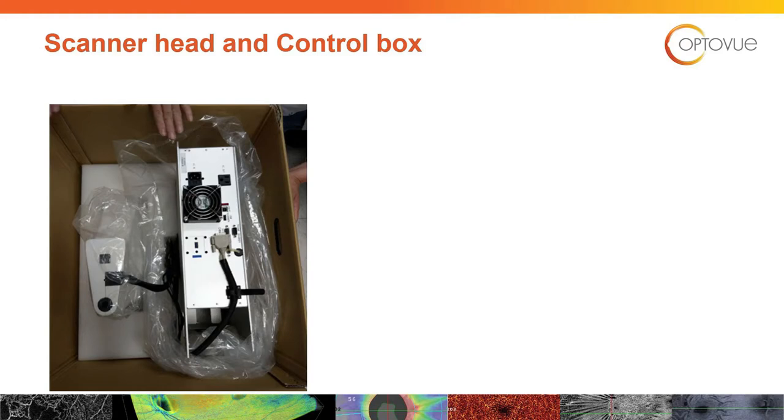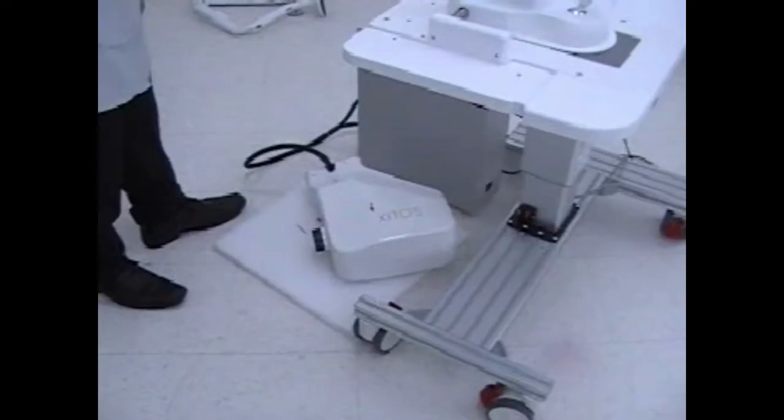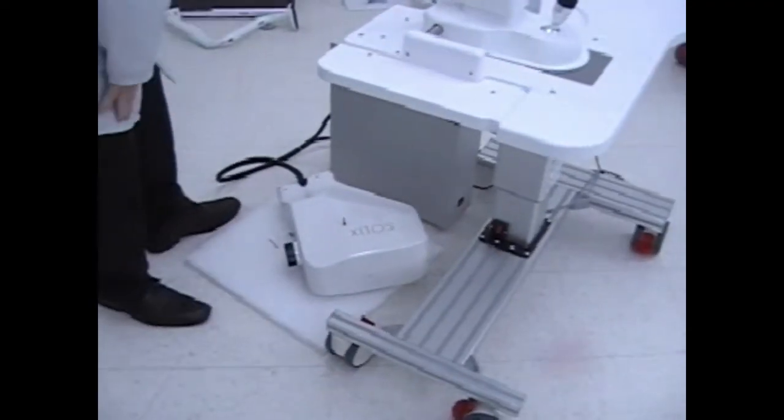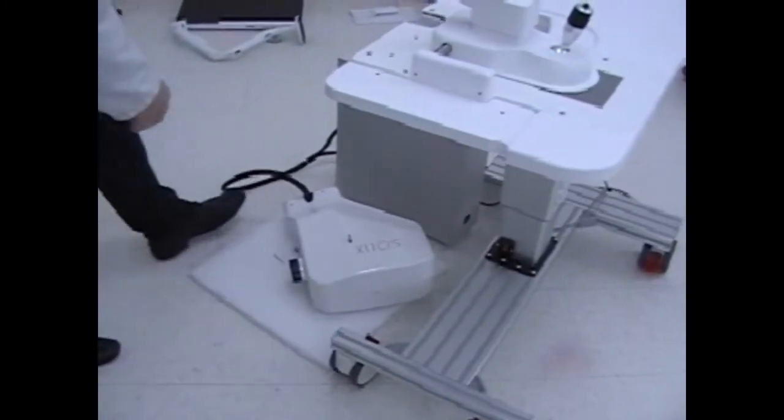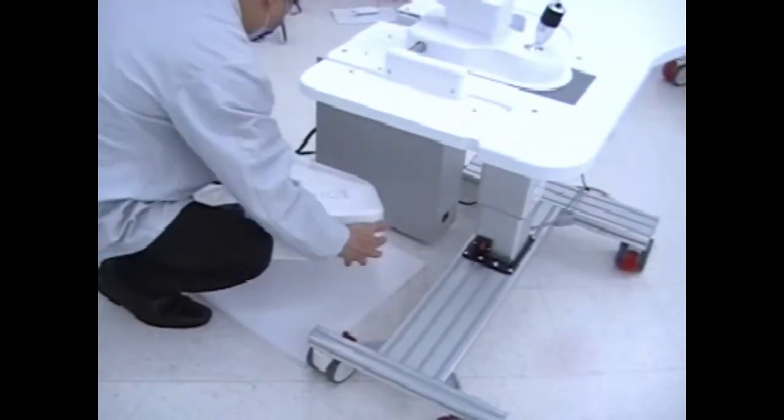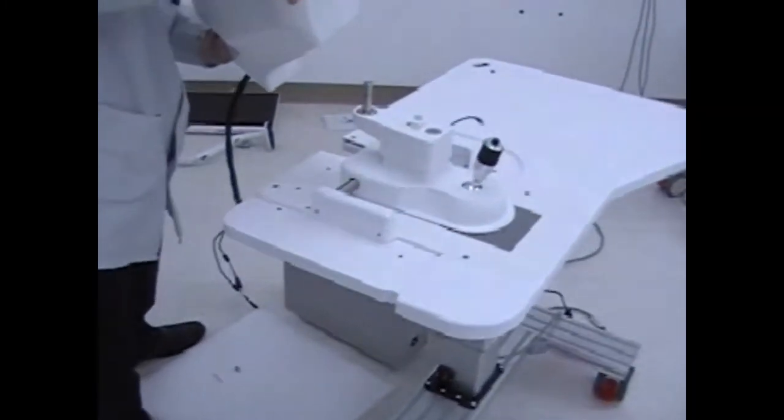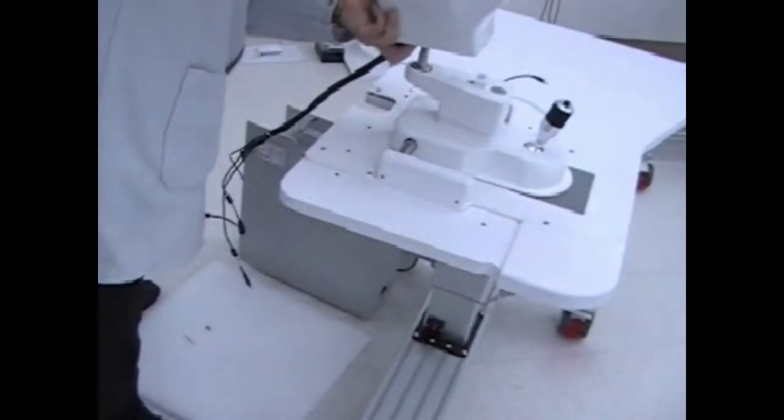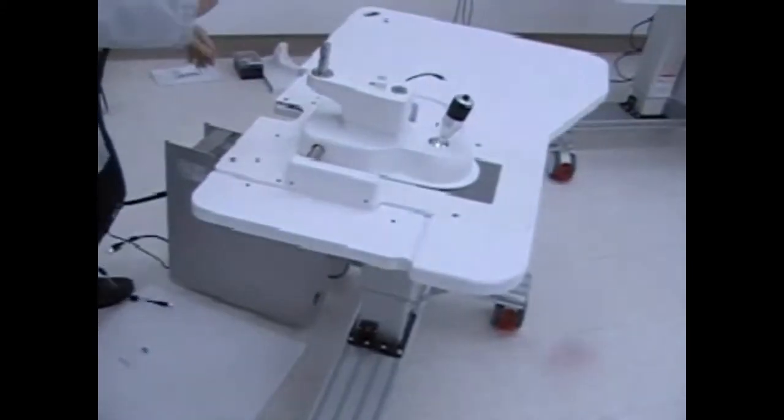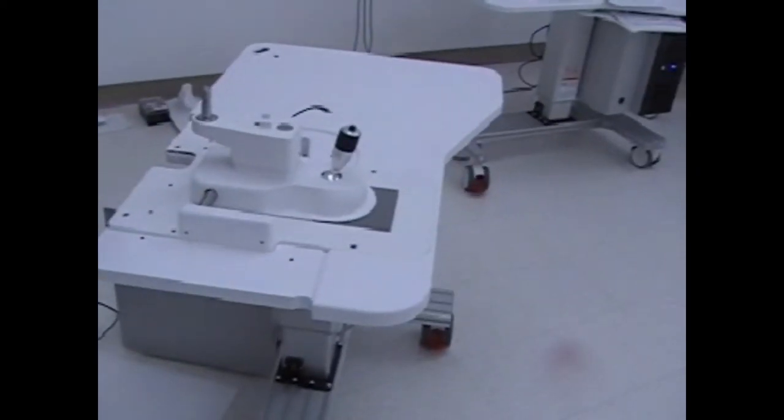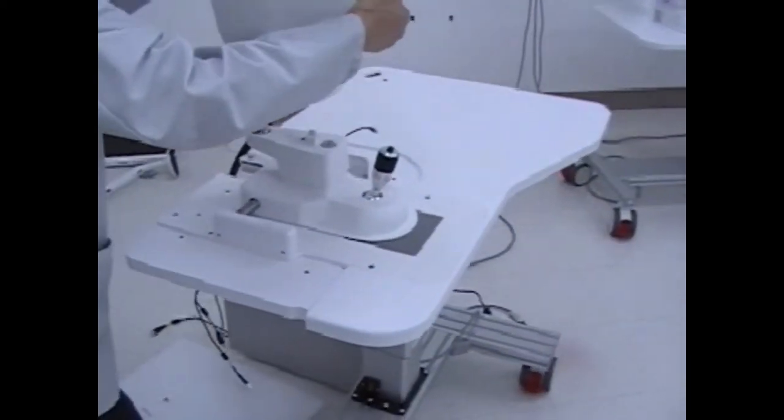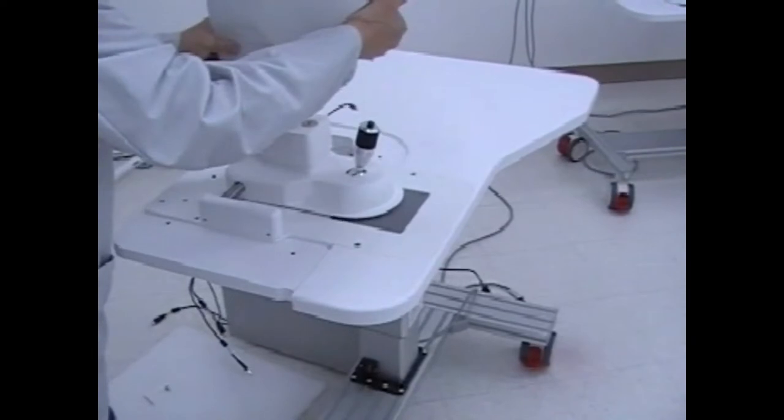Take care when lifting the scanner head and control box from the packaging. Make sure that the control box and scanner are close enough to the table so that when you lift the scanner head up to place it onto the joystick assembly, you do not put unnecessary tension on the cable. You may have to adjust the table height and the location of the control box.